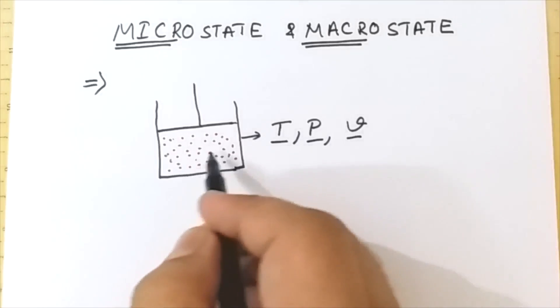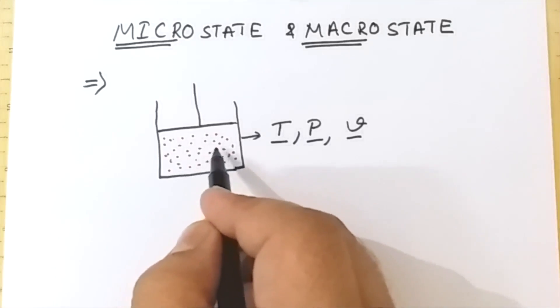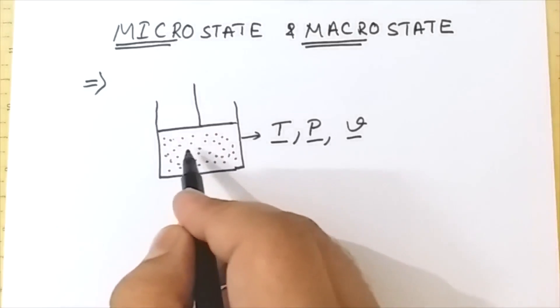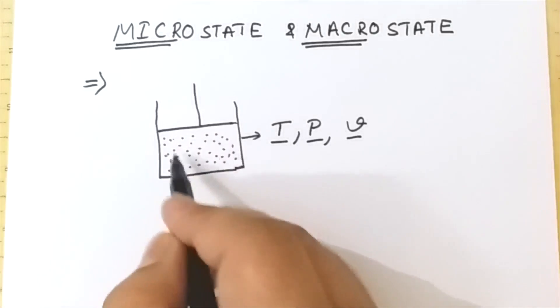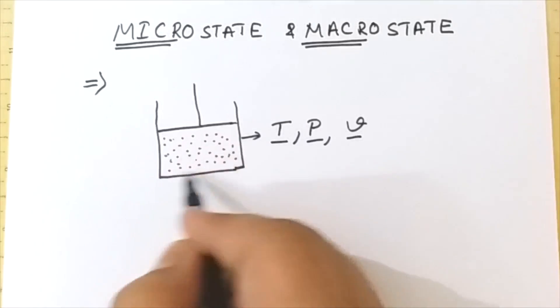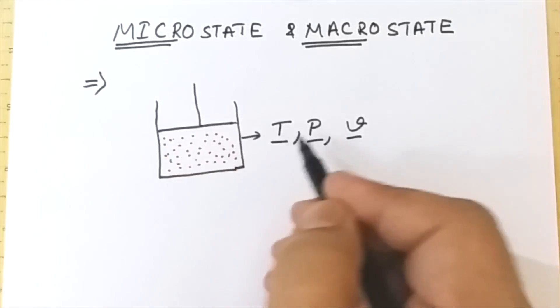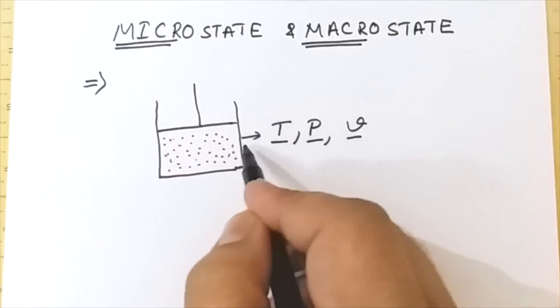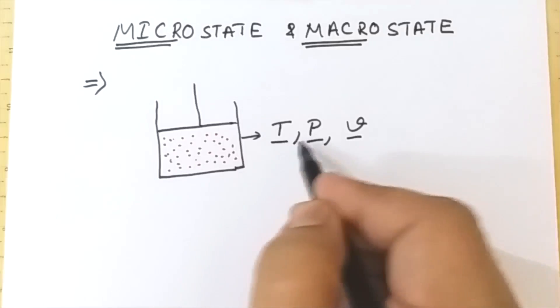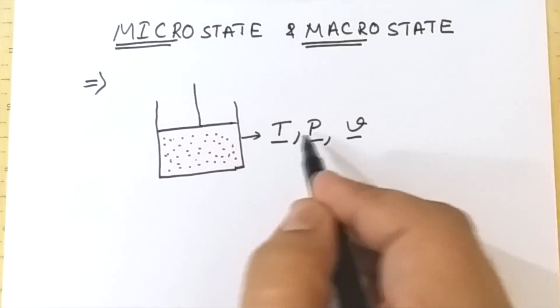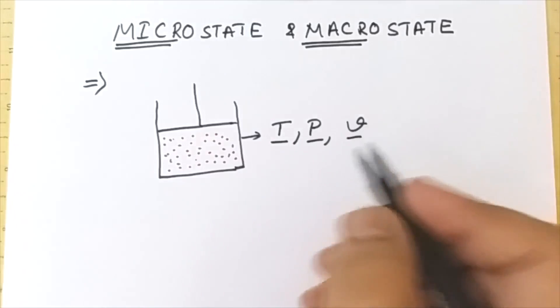So microstates are nothing but the different arrangements of particles in the space or in the piston, and the properties which arise because of those arrangements are known as macrostate.